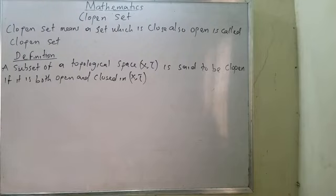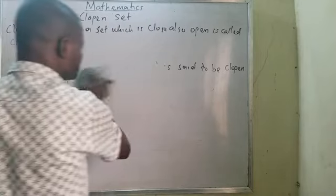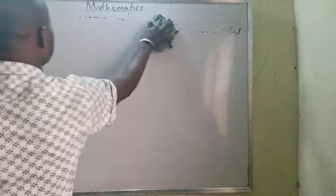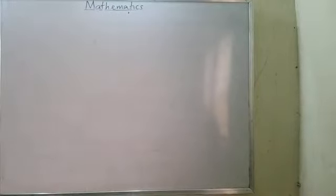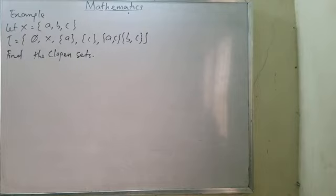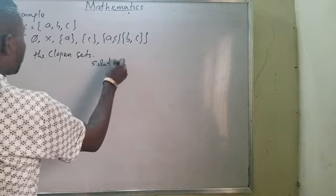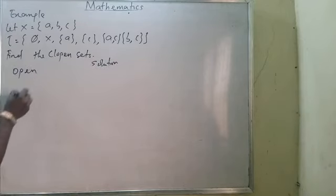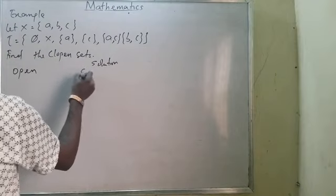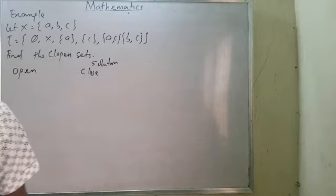Let me quickly use an example to illustrate my points. Look at this example for better understanding. The set S = {A, B, C} and the topology τ is also given. Find the clopen sets. To solve this problem, you have to list out both the open sets and the closed sets.